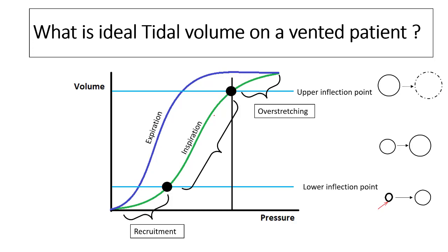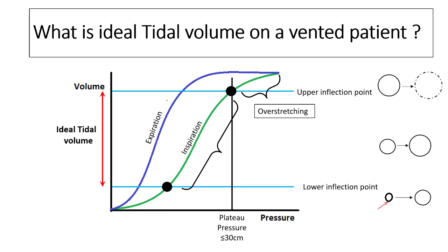Once you reach the upper inflection point, you enter the area of over-stretching where the lungs are over-inflated and encroaching upon the chest wall. This pressure typically corresponds to a plateau pressure of around 30 cmH2O. The ideal tidal volume is the volume required to ventilate between the lower and upper inflection points. The ideal PEEP is the pressure required to recruit all alveoli.